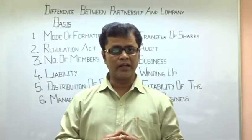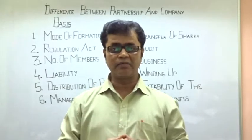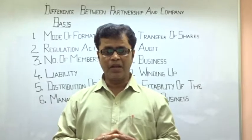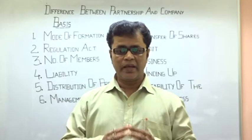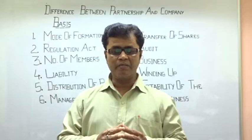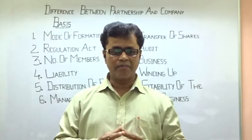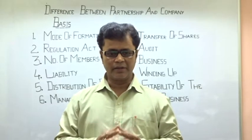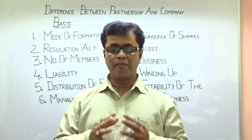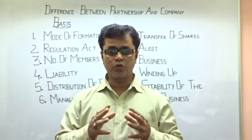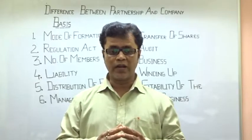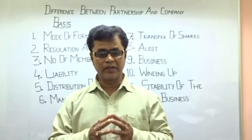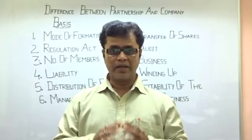In the case of a public company, the minimum number is seven without any maximum limit. A private company must have at least two members but not more than 200, excluding its present or past employee members. So public company minimum is 7 with unlimited maximum, and private company is 2 to 200.